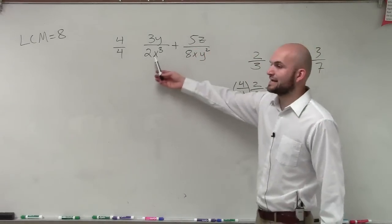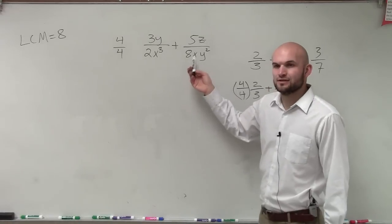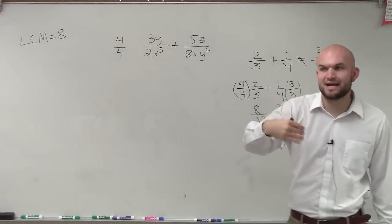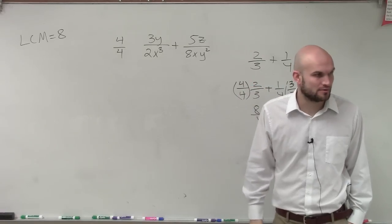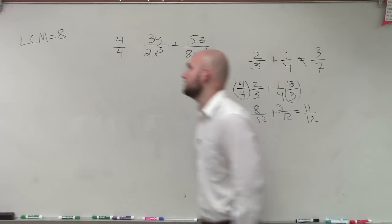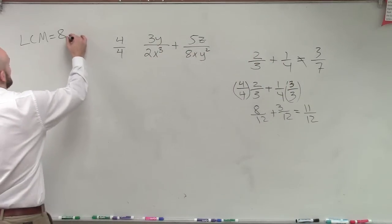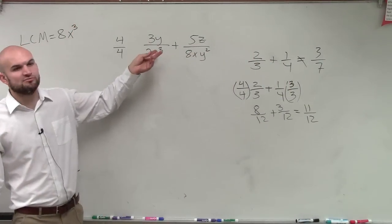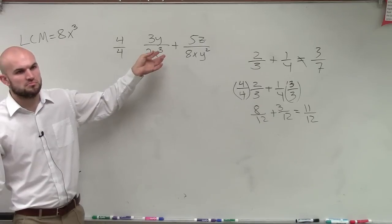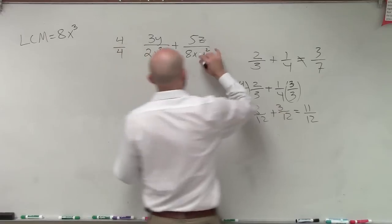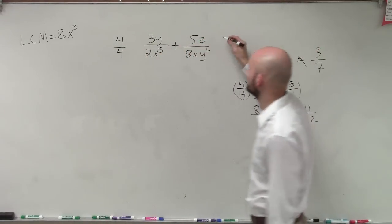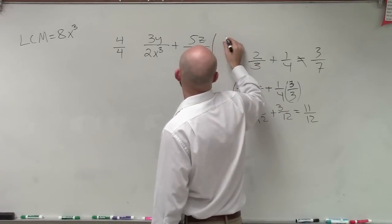So I have an X cubed and an X. So what is the smallest value of X that both my X and X cubed divide into? X cubed, very good. So I can say my LCM is X cubed. Now, do I need to multiply anything by X cubed to make it X cubed? No. But over here, what do I have to multiply X by to make it X cubed? X squared, very good.